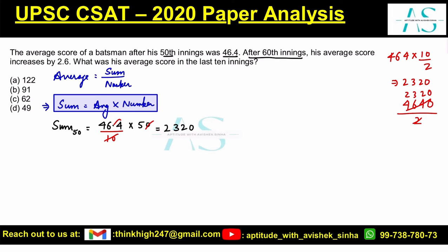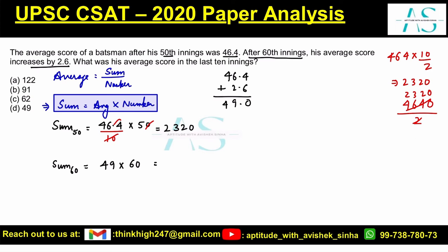After 60 innings, the average score increases by 2.6. So the new average is 46.4 plus 2.6, which is 49. The total runs for 60 innings is 49 into 60, which equals 2940.